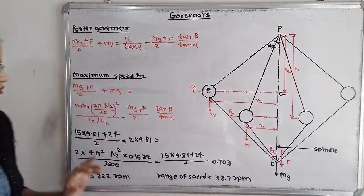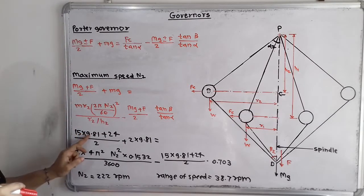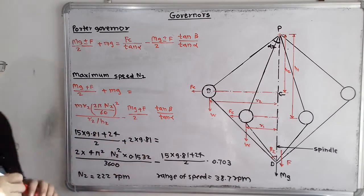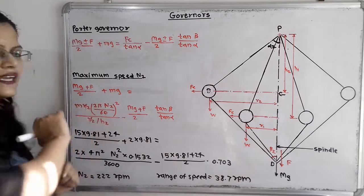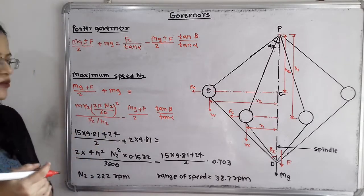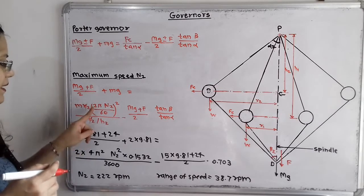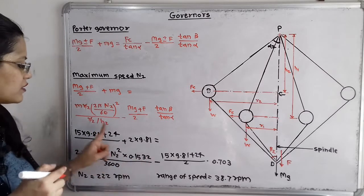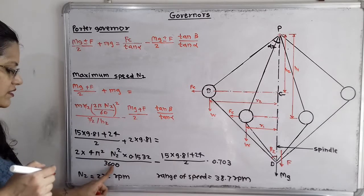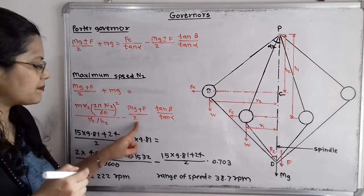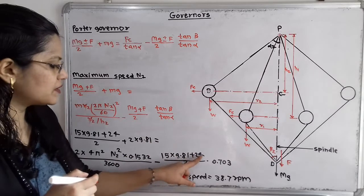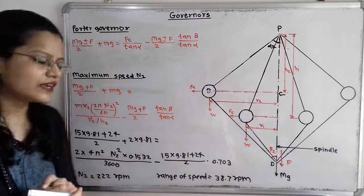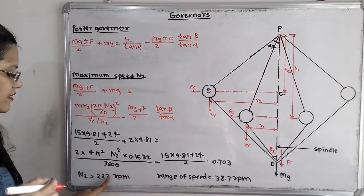Substituting values: (15×9.81 + 24)/2 + 2×9.81 = 2 × (4π²N2²/3600) × 0.1532 − (15×9.81 + 24)/2 × 0.703. Solving this equation gives N2 = 222 RPM.